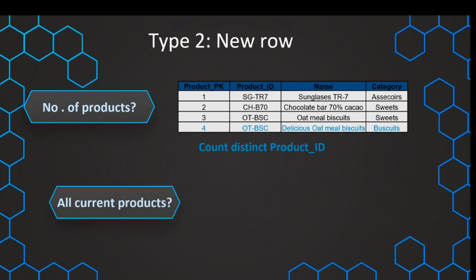This highlights that with this approach we have the highest analytical value and still have all of the possibilities. But this is still not perfect and you might still have some objections — for example, how can we find out what is the list of all of the current products? We cannot distinguish which is the current product with this approach, and therefore we need to implement a few strategies to administrate this Type 2 slowly changing dimension, which we will see in the next lecture.